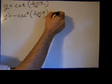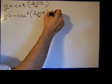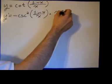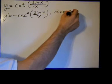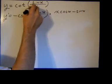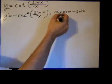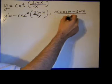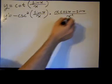We have a quotient, so we'll have the denominator times the derivative of the numerator, which is cosine of x, minus the numerator times the derivative of the denominator, which is one, all over the denominator squared.